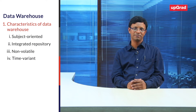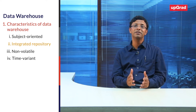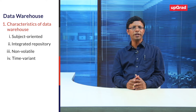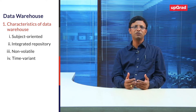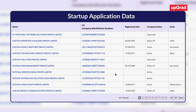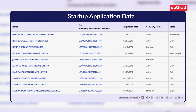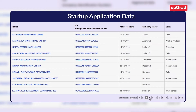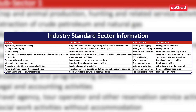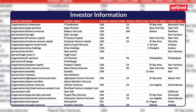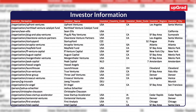Let us move on to the second keyword from the definition of the data warehouse. A data warehouse is an integrated repository. It is worth noting that information pertaining to a subject may actually be coming from many different systems. In our own case, there could be one portal where the startup application data is collected, another database that contains industry-standard sector information, and yet another database that contains information about investors themselves. When building a data warehouse, we must bring together all the information from these multiple sources into a single integrated data warehouse repository hosted in a single location.